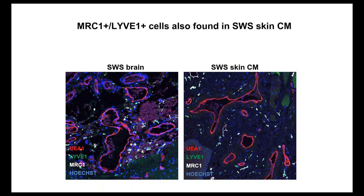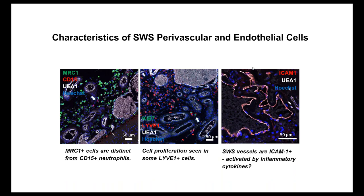Colette also found these triple-positive cells in Sturge-Weber skin capillary malformation specimens. These cells are not positive for CD15, a neutrophil marker — neutrophils are distinct from this population. Some of the LYVE1-positive cells express Ki67, suggesting some proliferative capacity. The endothelium stains strongly positive for ICAM1, a leukocyte adhesion molecule. We're considering whether this is an inherent feature of Sturge-Weber vessels or reflects exposure to inflammatory cytokines from neighboring cells.